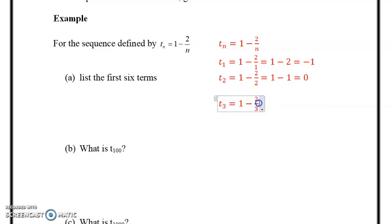t3 is equal to 1 subtract 2/3, which is the same as 3/3 minus 2/3. I know I don't need to show this for everyone, but I'll show it this once, and that will give us the answer of obviously 1/3. So we continue to do that to generate the first six terms.